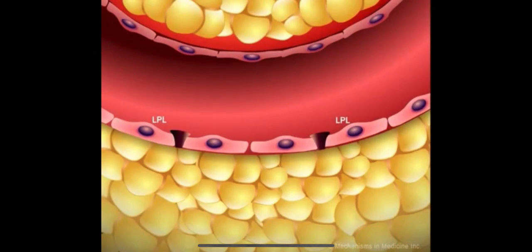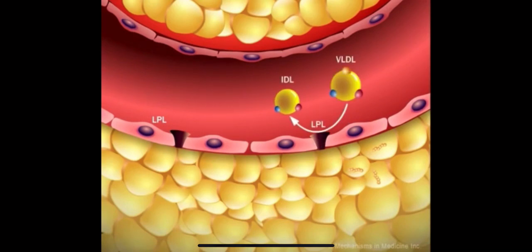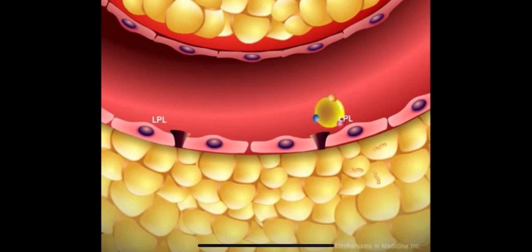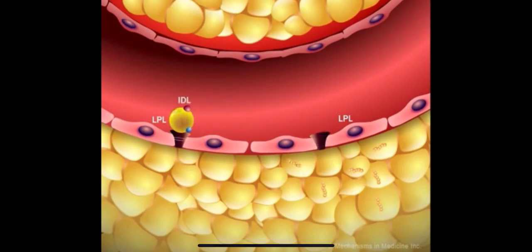In blood vessels, the enzyme lipoprotein lipase, LPL, hydrolyzes the triglycerides of VLDL. The products of this are primarily monoglycerides and free fatty acids. Lipoprotein lipase converts a VLDL particle into a VLDL remnant particle, called an intermediate-density lipoprotein, IDL. Monoglycerides and free fatty acids are taken up by the adipose tissue cells. Some intermediate-density lipoproteins get reabsorbed by the liver, while others can be further modified in the capillaries by the action of lipoprotein lipase, forming more compact LDL particles.